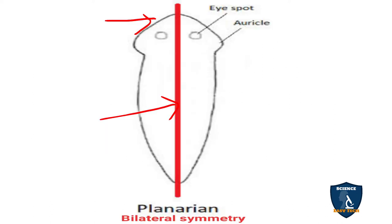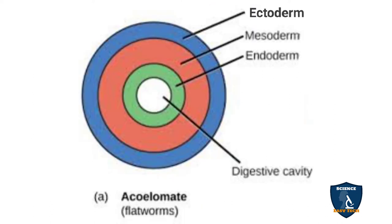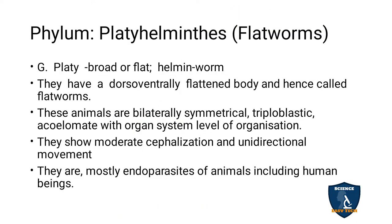Triploblastic — the animal is made up of three layers in embryonic origin: outer ectoderm, inner endoderm, and middle mesoderm. These three layers are present in flatworms. It is acoelomate, meaning there is no body cavity — only the digestive cavity is present. This is organ system level of organization.